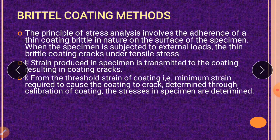First, we need to understand brittle coating. Brittleness means the material is hard but does not give any yielding. If you apply any load on brittle materials, it will crack — it takes a lot of load but does not give any plastic deformation; it directly gives you a crack. In the brittle coating method, a material is pasted on the specimen and when cured it acts as a brittle layer, giving cracks without elongation when loaded.